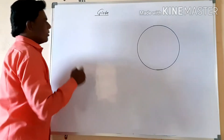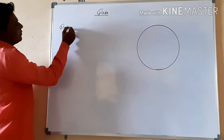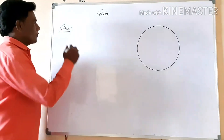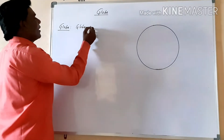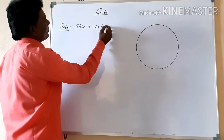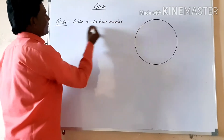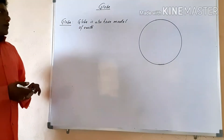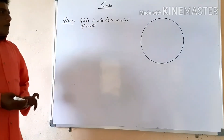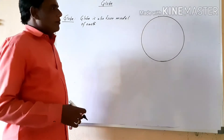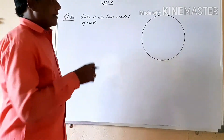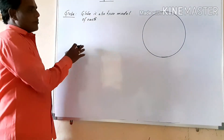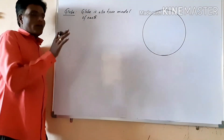First we have to know what is a globe. Globe is a true model of the earth. Globe is also called the true model of earth. On that globe we have seen that there are lines — some horizontal lines and some vertical lines on the globe. So today we will come to know what these lines represent.